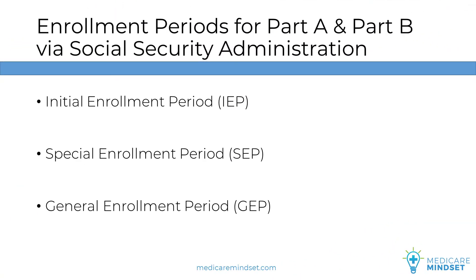To enroll in Medicare Part A and Part B, you must do so through the Social Security Administration. Depending on the situation, there are different timeframes to do this. You might enroll during the Initial Enrollment Period, or IEP, when you turn 65. You might delay Medicare completely or partially because you're covered in a group health insurance plan, and enroll later during your Special Enrollment Period, or SEP. And if you missed both your IEP and SEP, your last resort is to use the General Enrollment Period, or GEP.